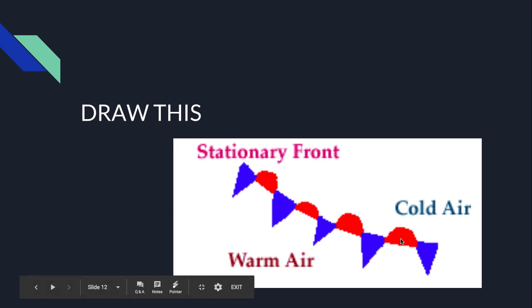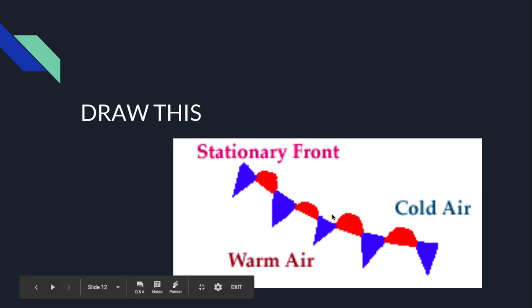In a cold front, cold air moves in and warm air moves out, causing thunderstorms and rain along the front. In a warm front, the warm air slides over the cold air, causing clouds ahead of the front and bringing warmer temperatures. In a stationary front, neither air mass moves, causing rain over a long period of several days. That's the difference between all three fronts.